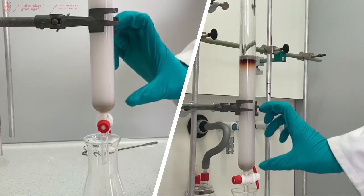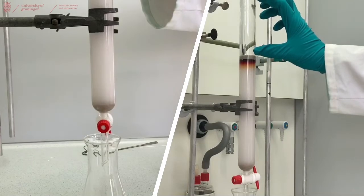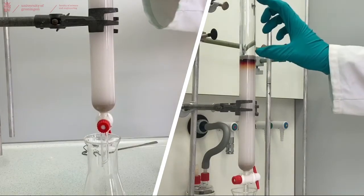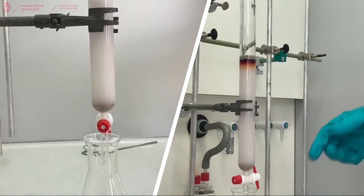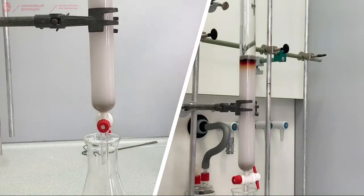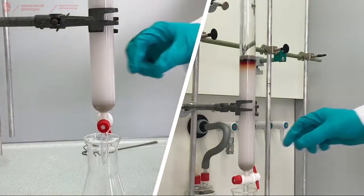After around 60% of this volume, so that is about this, which is a similar amount that was on top of our column now, is run through, we will start collecting our fractions. But now we will just push through 60% of volume.